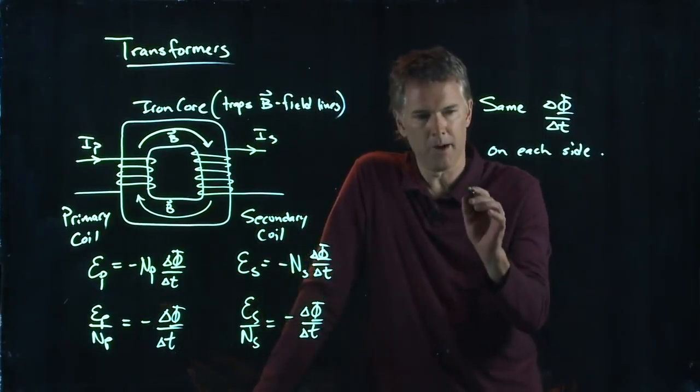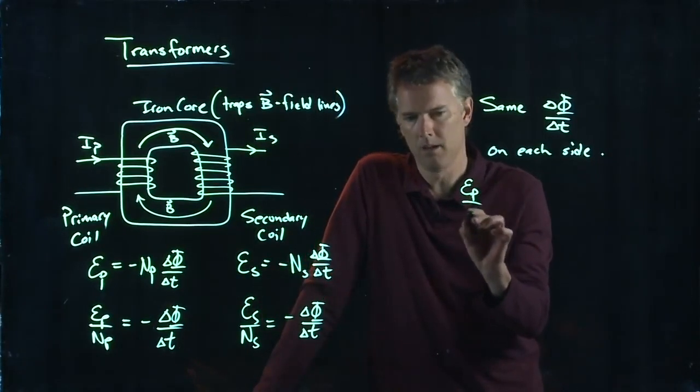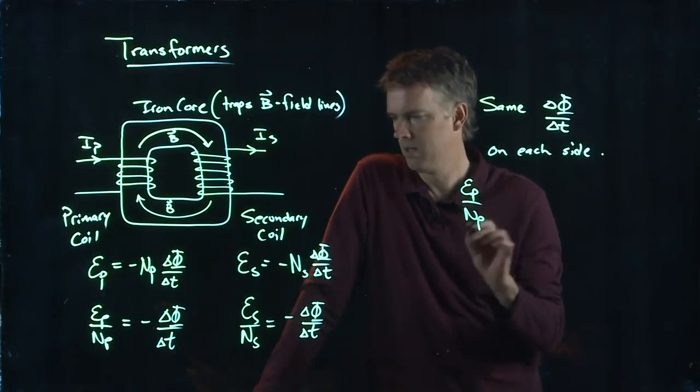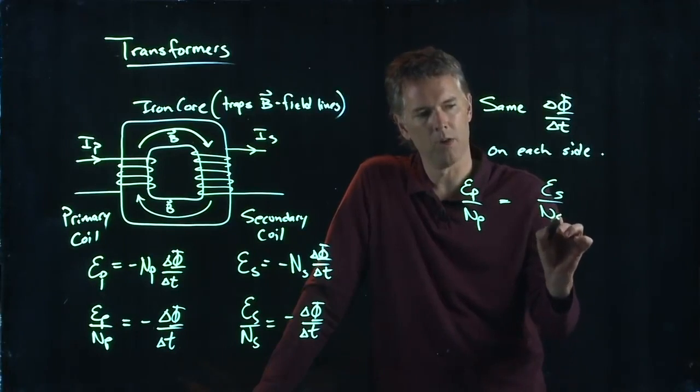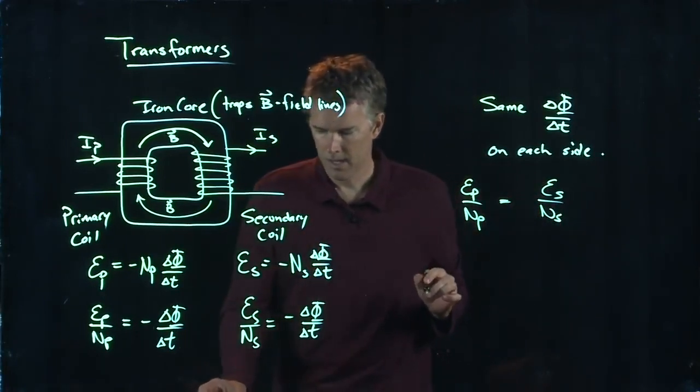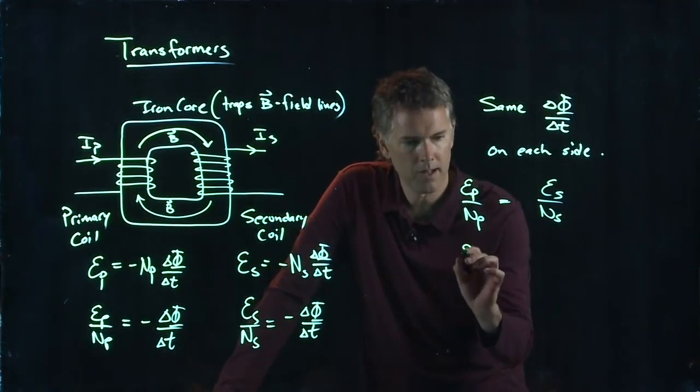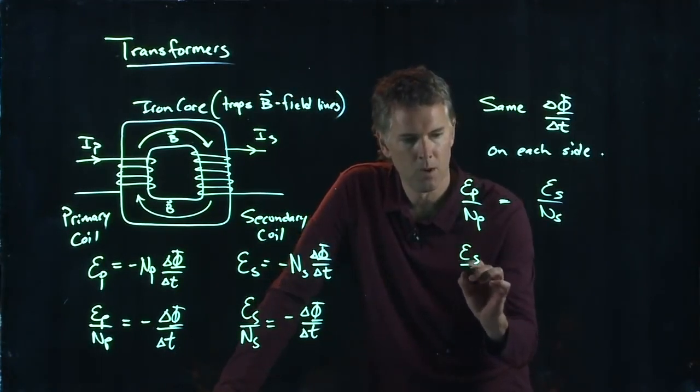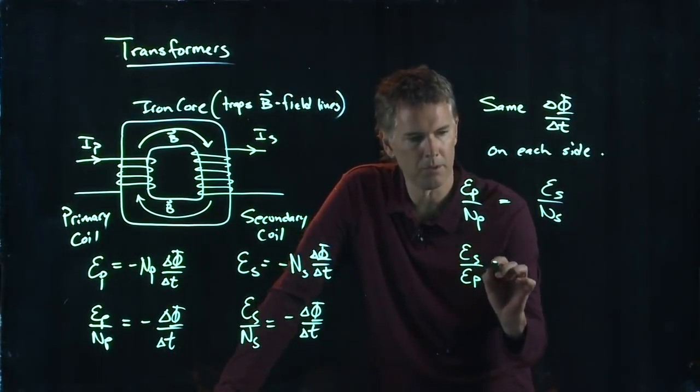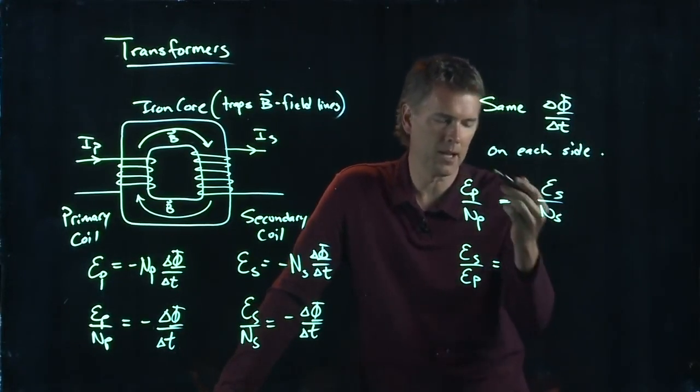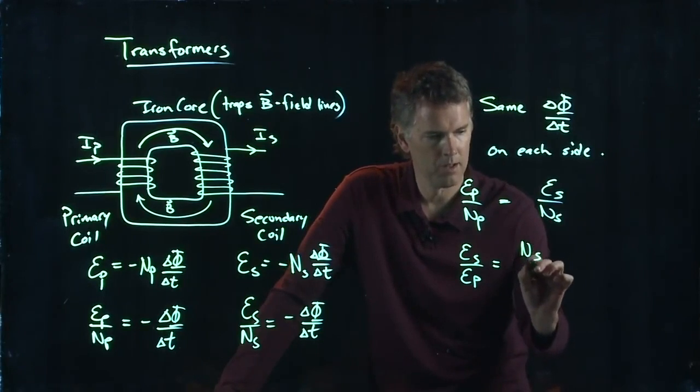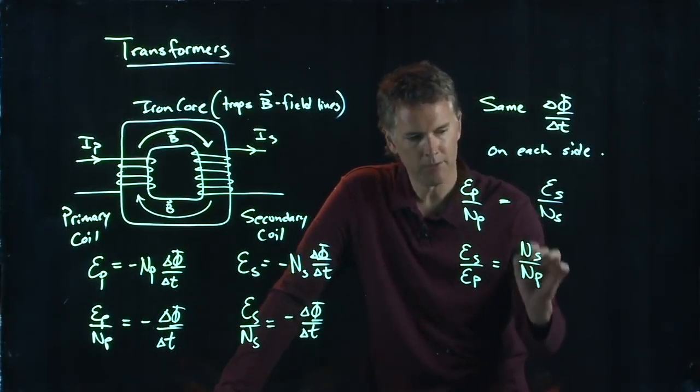So now this whole thing simplifies to what? Epsilon P over N-P equals Epsilon S over N-S. And this is typically written like this. Epsilon S over Epsilon P, I had to divide by an Epsilon P and so I got to multiply back up by N sub S, is equal to N-S over N-P.